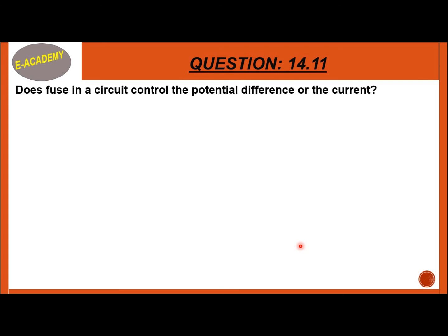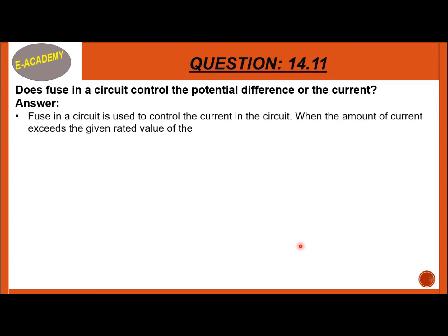Question 14.11: Does a fuse in a circuit control the potential difference or the current? The fuse in a circuit is used to control the current. When the amount of current exceeds the rated value of the fuse, it burns out, melts, and breaks the circuit, stopping the current flow.